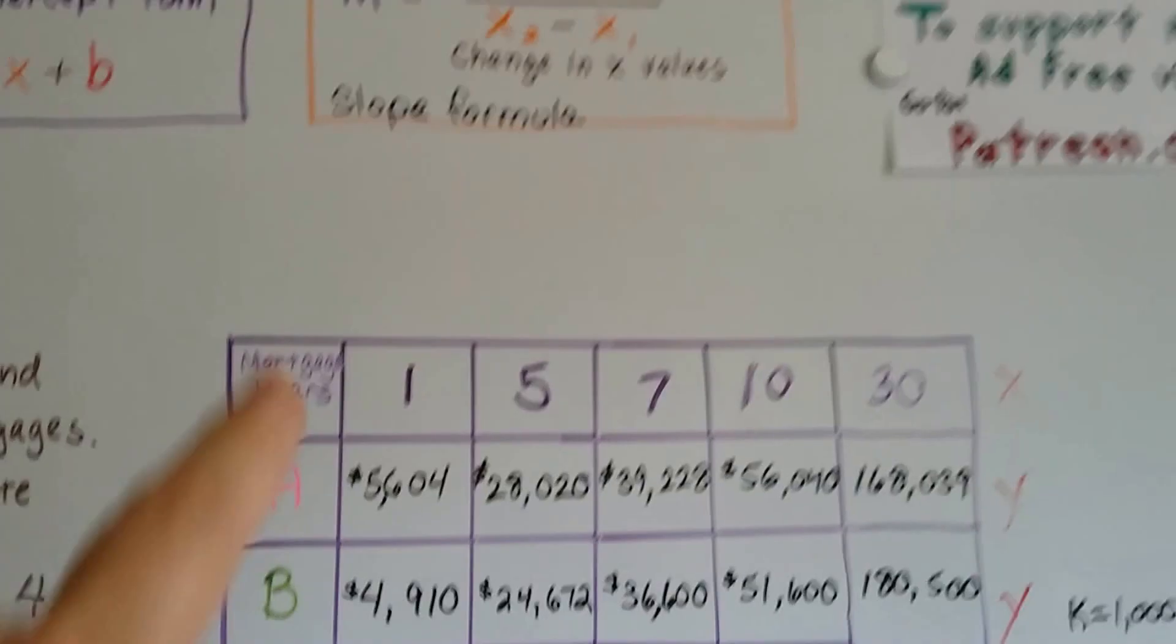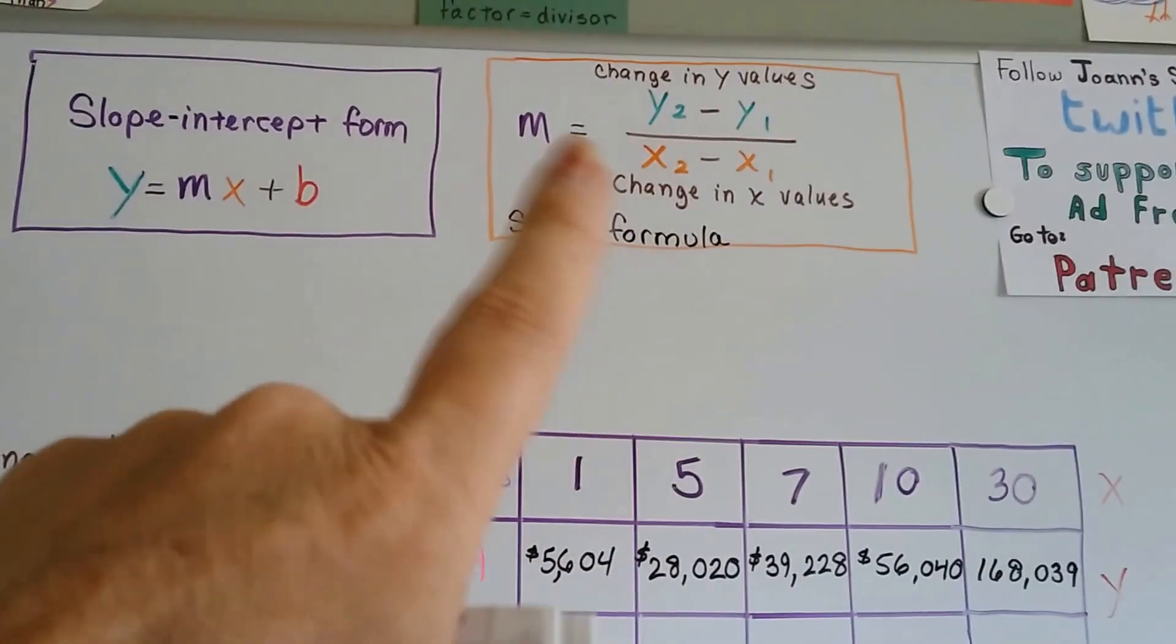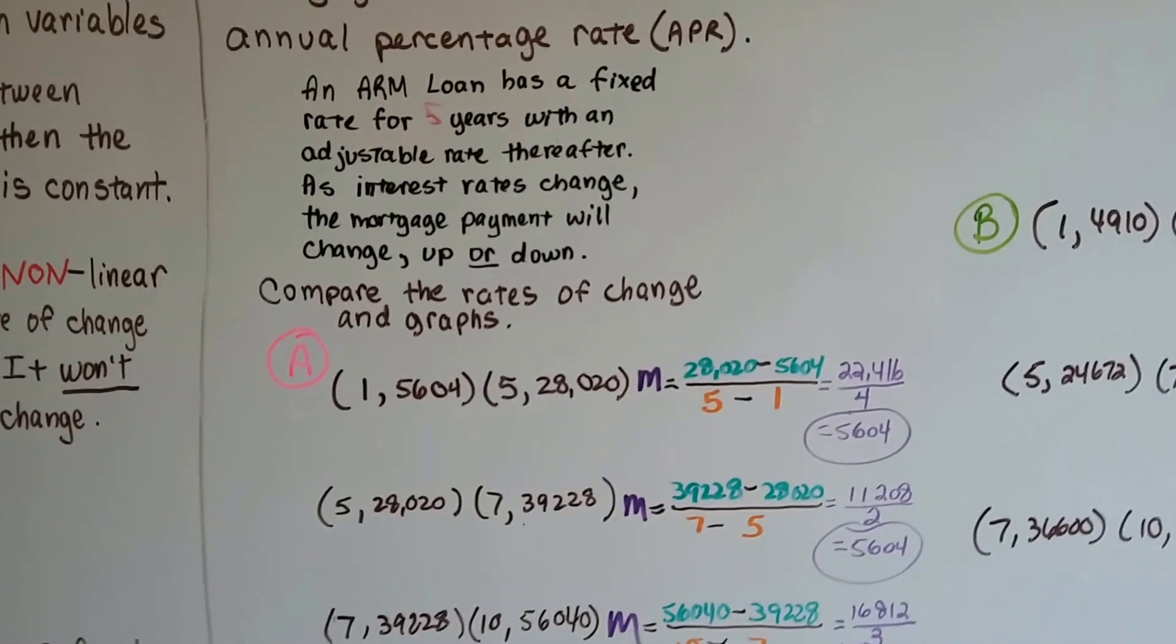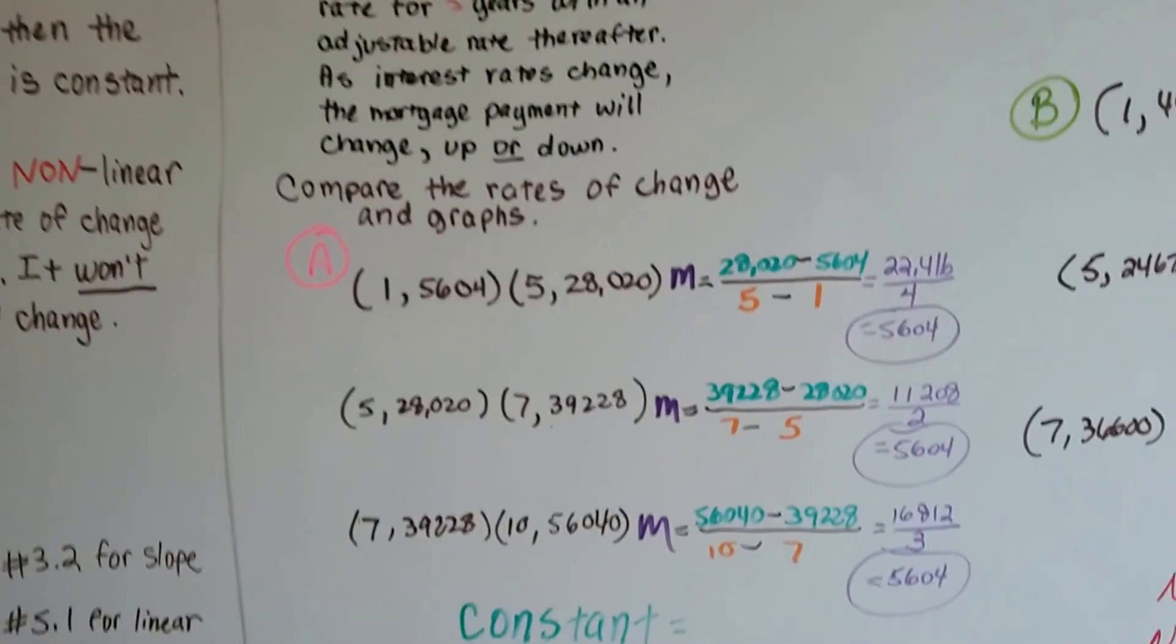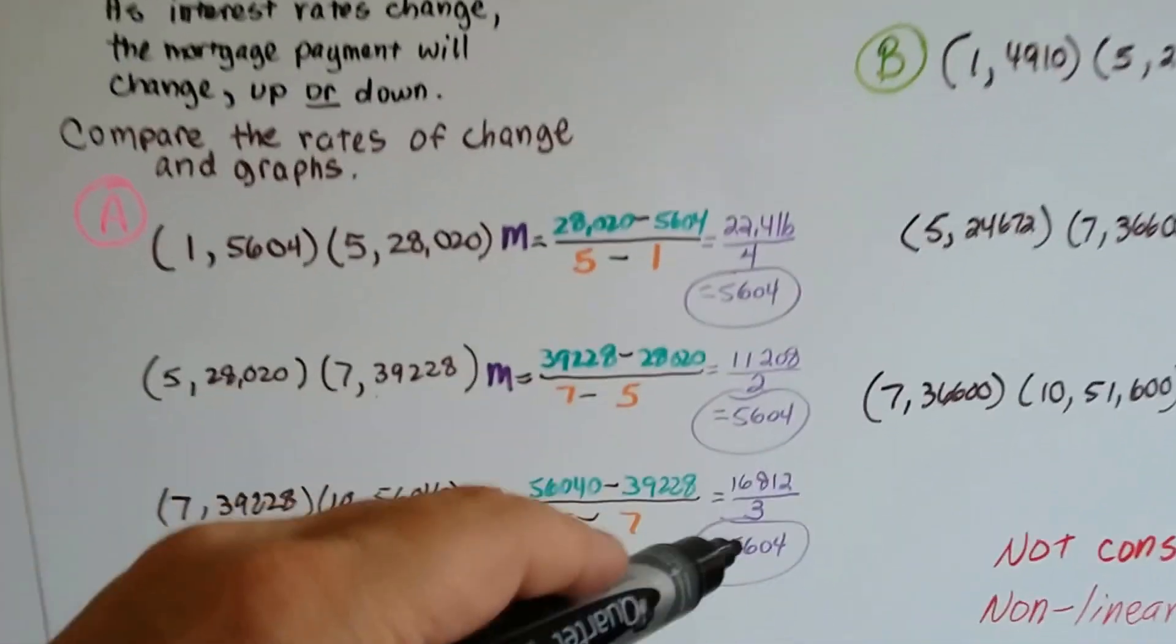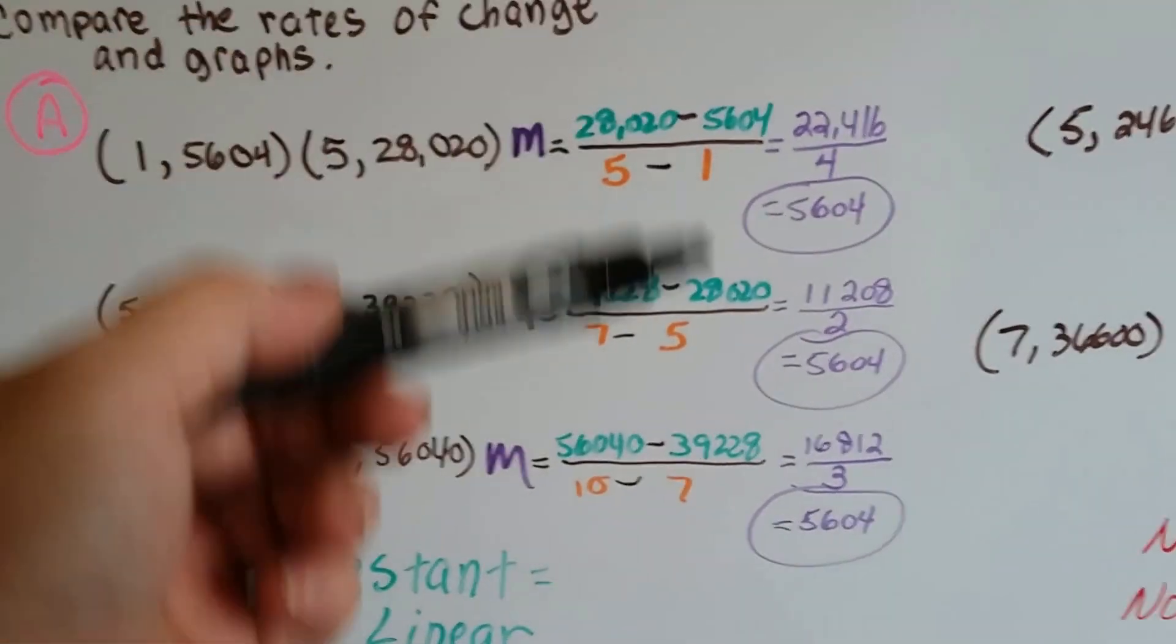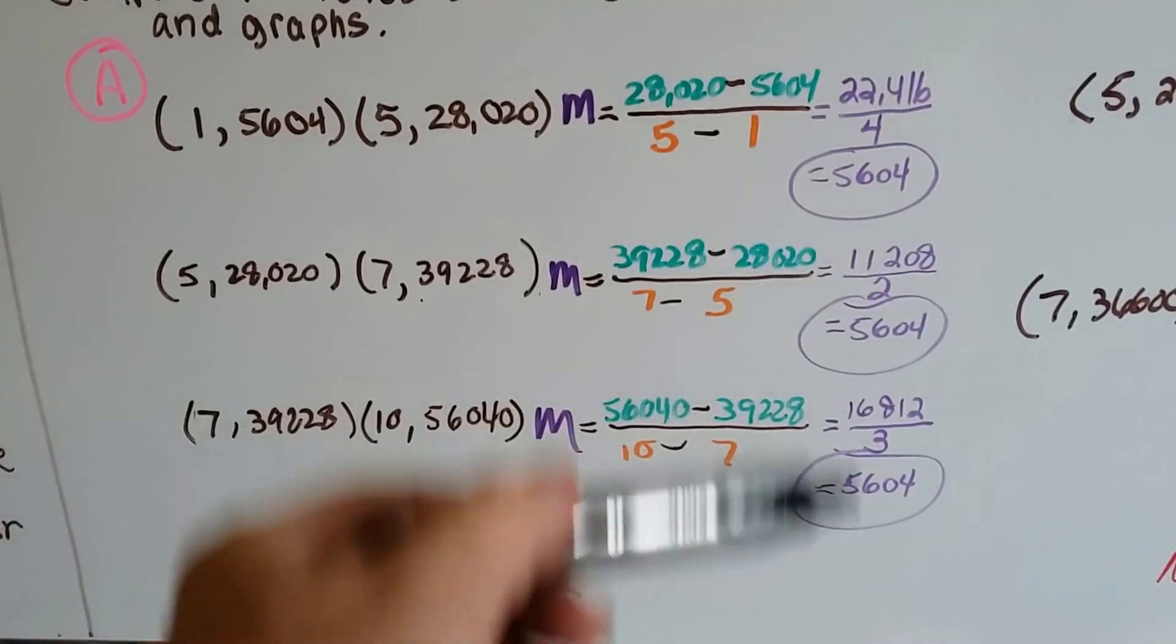And what I did was I took the slope formula, the Y values over the X values, and found the change between them. I took my Y2 and subtracted my Y1, and I took my X2 and subtracted my X1, and I found the slopes for the 30-year fixed mortgage, A, the pink one, and all the slopes are the same. Look, 5,604. So the payments are the same. We knew that, and it's constant, and it's linear because all these slopes are the same.